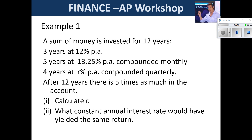First, a nice and easy one. A sum of money is invested for 12 years: for three years the interest rate is 12% per annum, for five years it goes to a monthly rate, and for four years it goes to a quarterly rate. After 12 years, there's five times as much in the account. You don't need particular values — if you start with P, you end up with 5P. It's really the ratio we're playing with here.